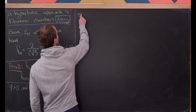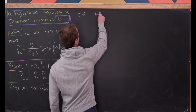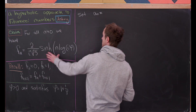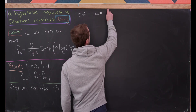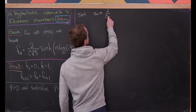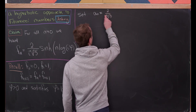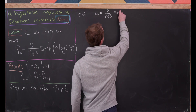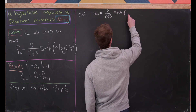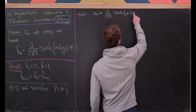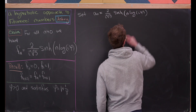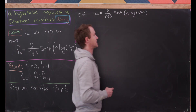We're going to set Aₙ equal to the right-hand side. So we have 2 over i to the n times the square root of 5, times the hyperbolic sine of n times the log of i times phi.